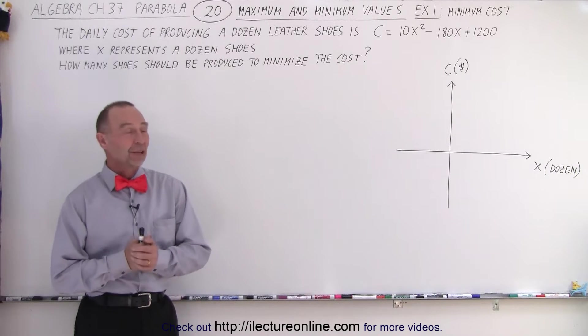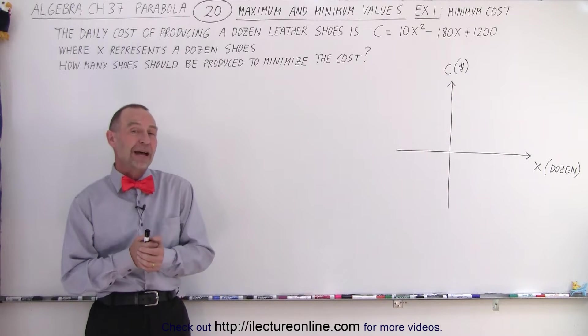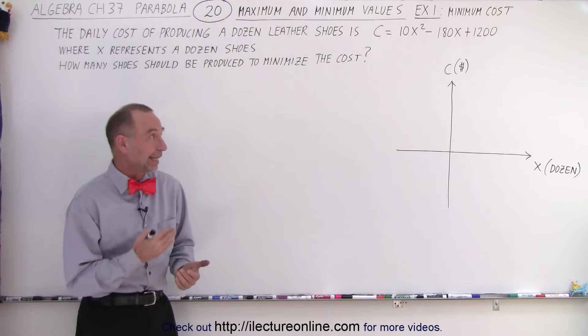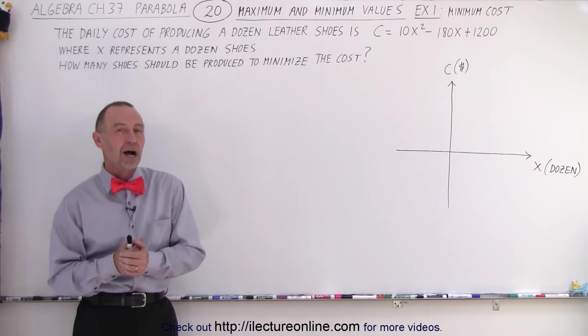Welcome to ElectronLine. Here's our first example of how to find the maximum or minimum of something. In this case, we're going to find the minimum cost.